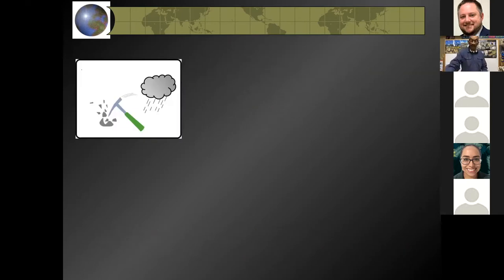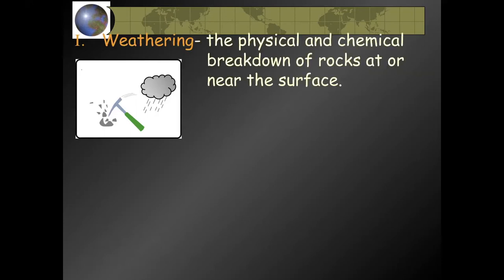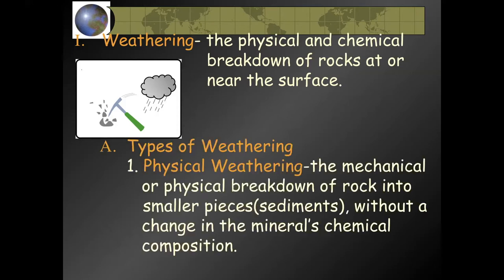In this image you see a hammer and rain — rocks are exposed to everything happening on the surface of our planet. Weathering is the physical and chemical breakdown of rocks at or near the surface. Physical weathering is the mechanical or physical breakdown of rock into smaller pieces called sediments, without a change in the mineral or chemical composition — meaning the minerals making up the rock don't change.